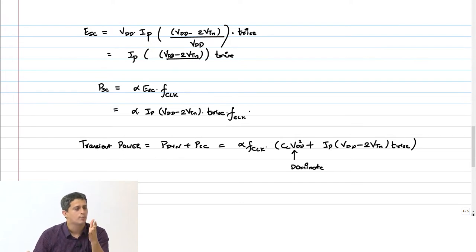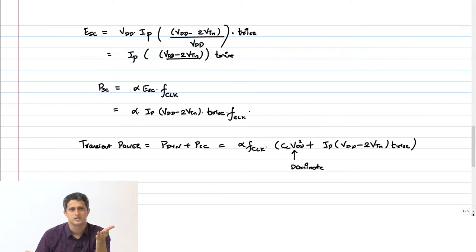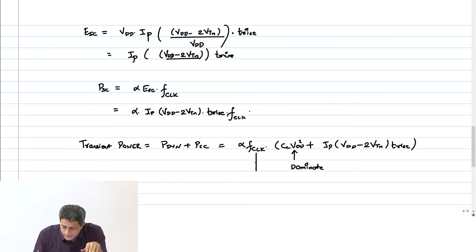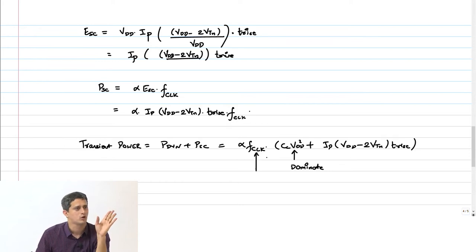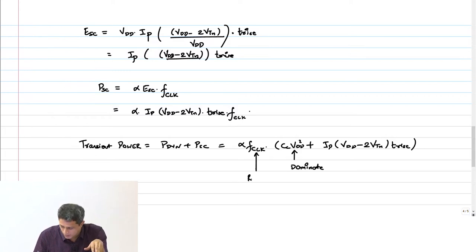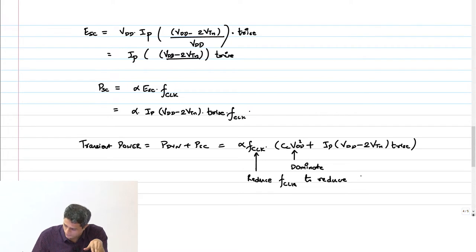But beyond a point I cannot keep reducing my supply voltage — there are certain limitations in scaling the supply voltage. So the best way is to also reduce your frequency of operation if you want to make the power lesser. You can reduce F_clock to reduce P_transient.